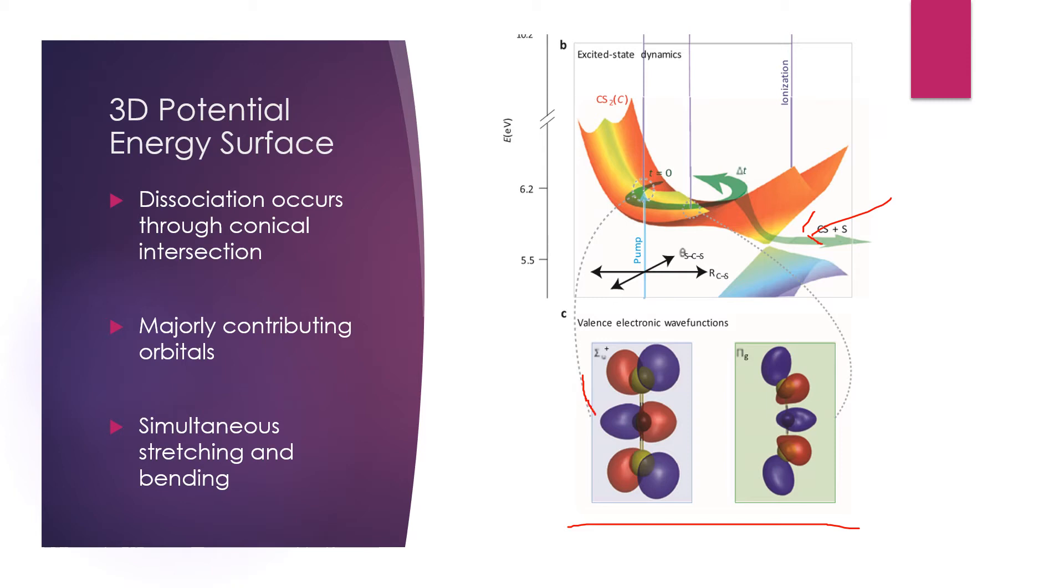At later times, the wave packet develops and the majorly contributing orbital is instead this πg orbital. These purple lines represent the ionization due to the probe pulse through which we can measure the character of the system.